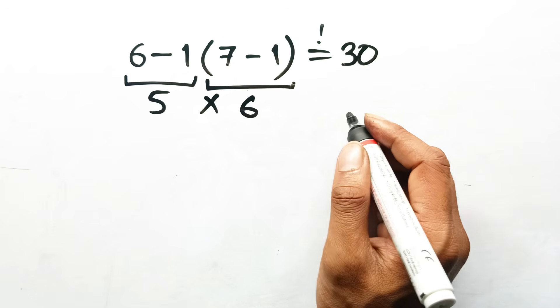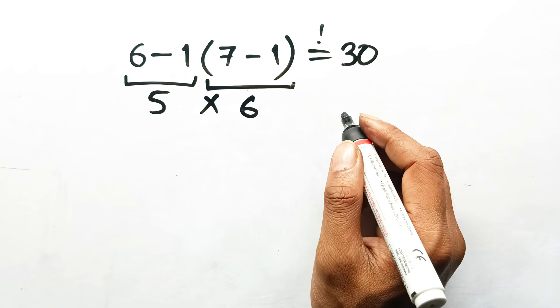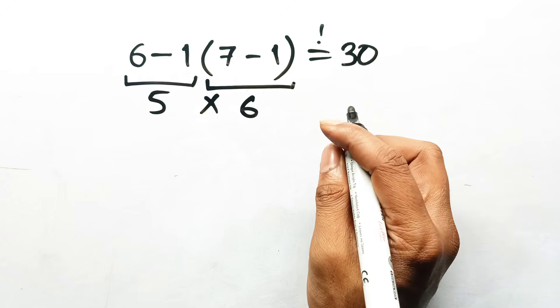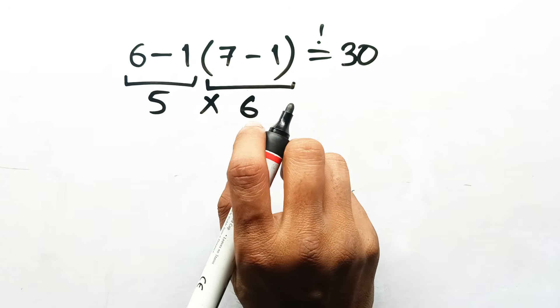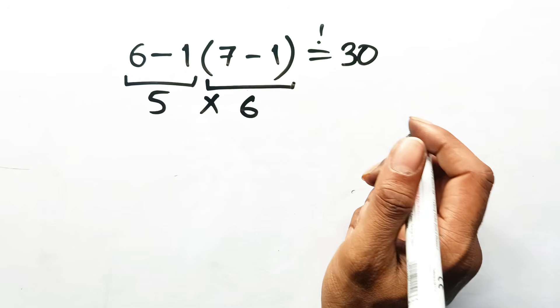Honestly, that's exactly why this problem is a trap. It lulls you into thinking subtraction happens first just because it's written on the left. But math isn't about shortcuts. It's about the order of operations.